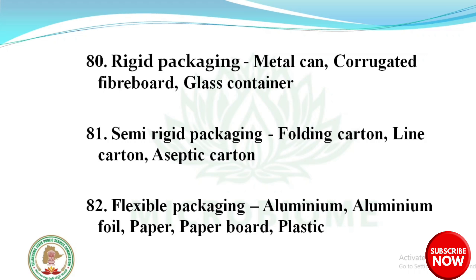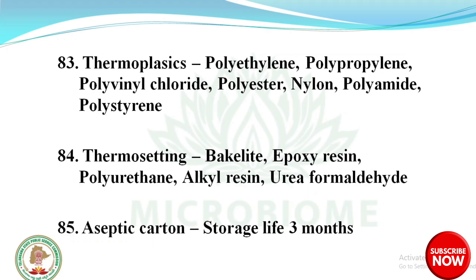Examples of semi-rigid packaging are folding carton, linen carton, and aseptic carton. Examples of flexible packaging are aluminum foil, paper, paperboard, and plastic. Thermoplastics include polyethylene, polypropylene, polyvinyl chloride, polyester, nylon, polyamide, and polystyrene.